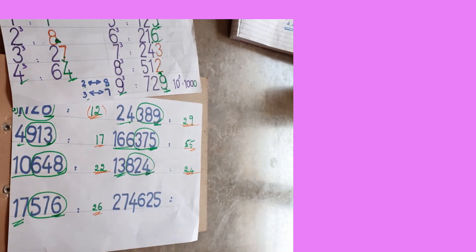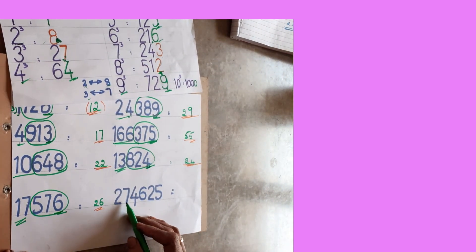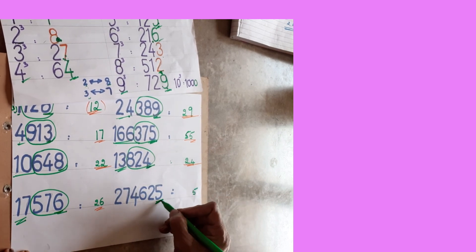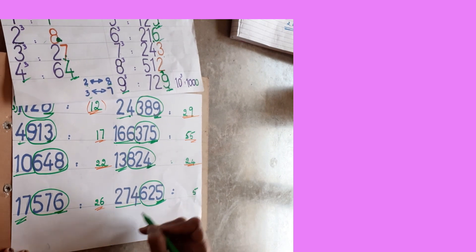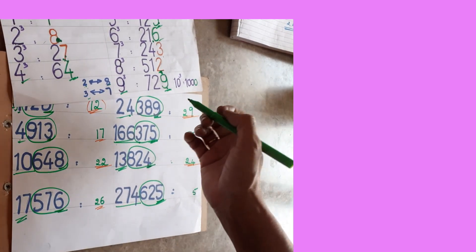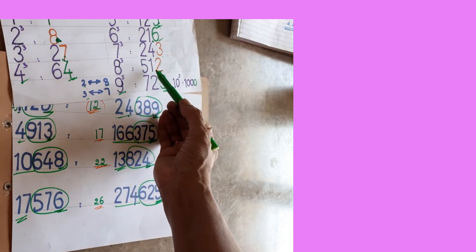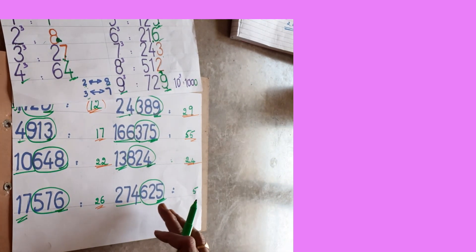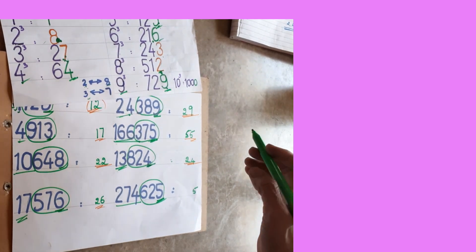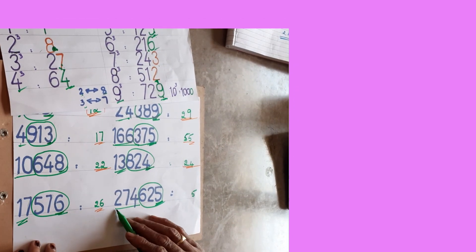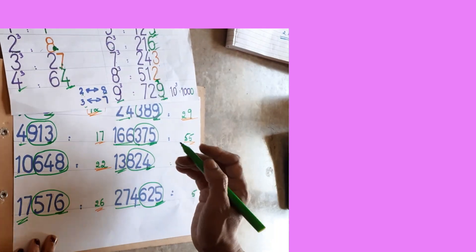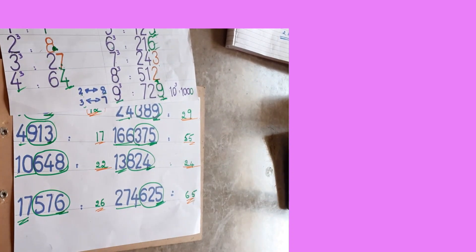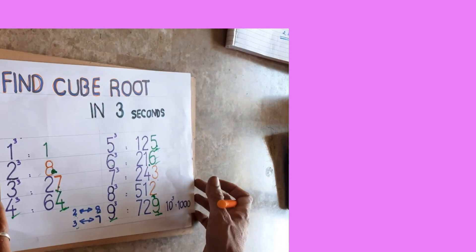One more sum: 274625. Units place is 5 — same digit, write 5. Eliminate 3 digits — remaining is 274. 274 is nearby which cube? 6 cube is 216 (less), 7 cube — wait, 8 cube is 512 (more). 274 is between 216 and 512 — take the lesser: 6. Answer is 65. Check: 65 × 65 × 65 = 274625.